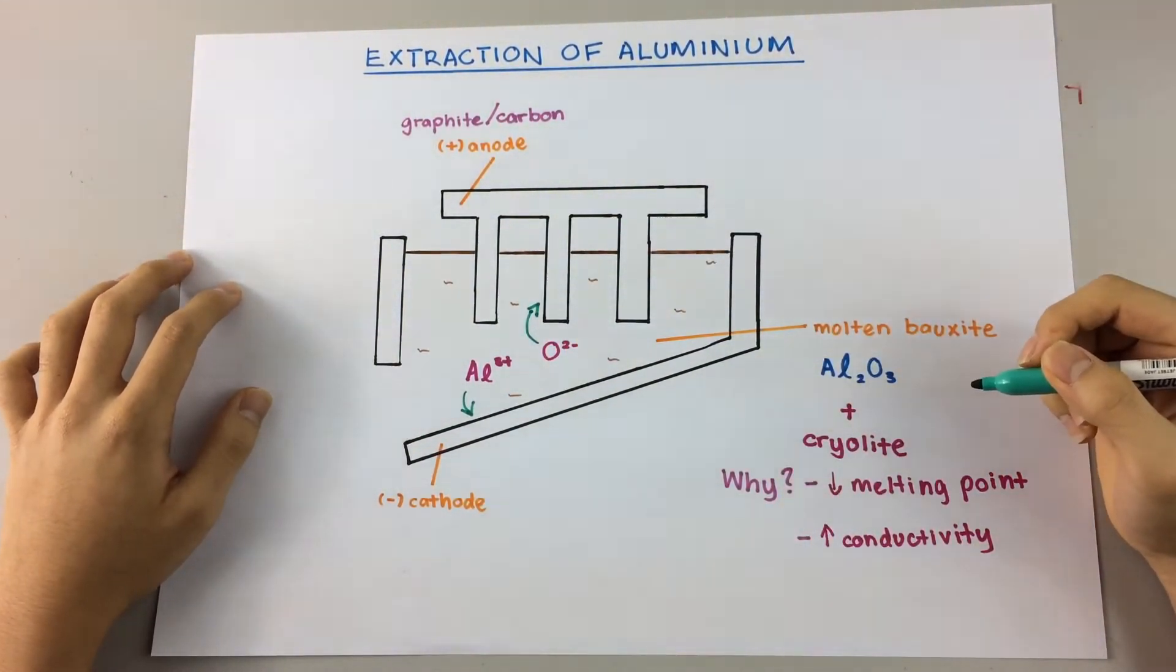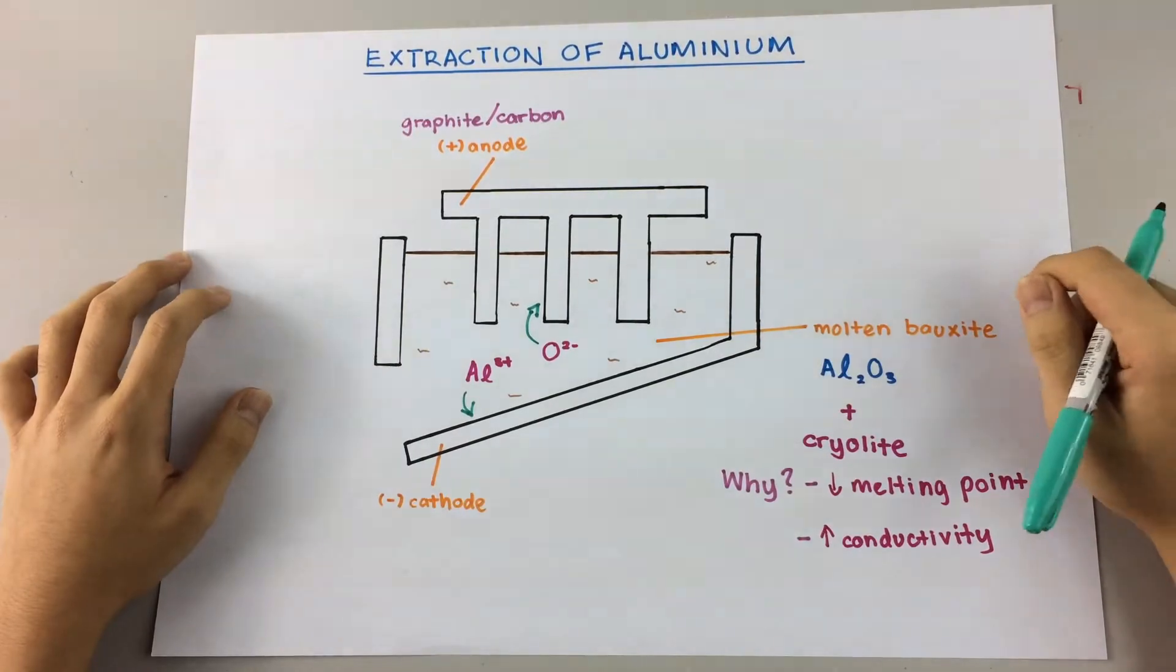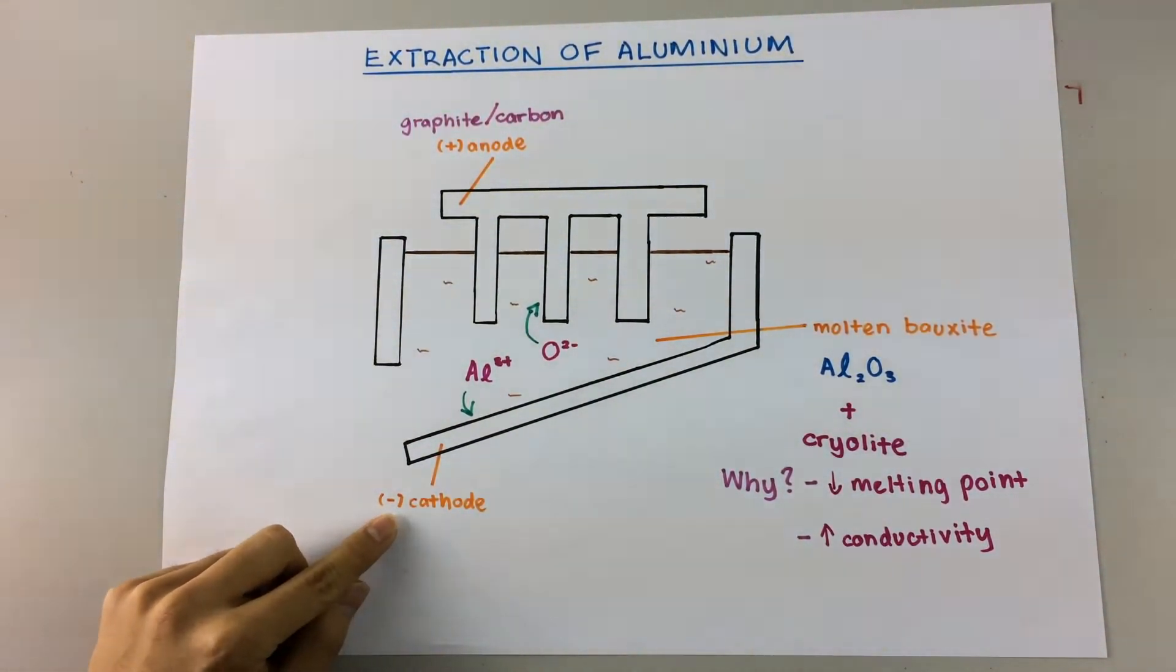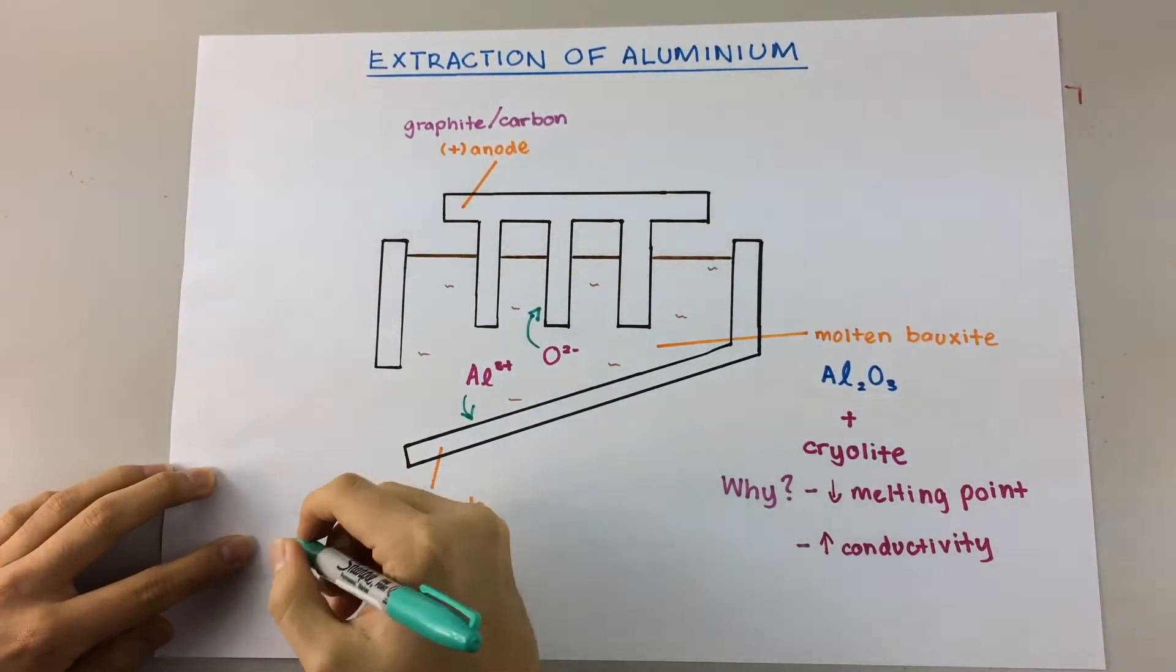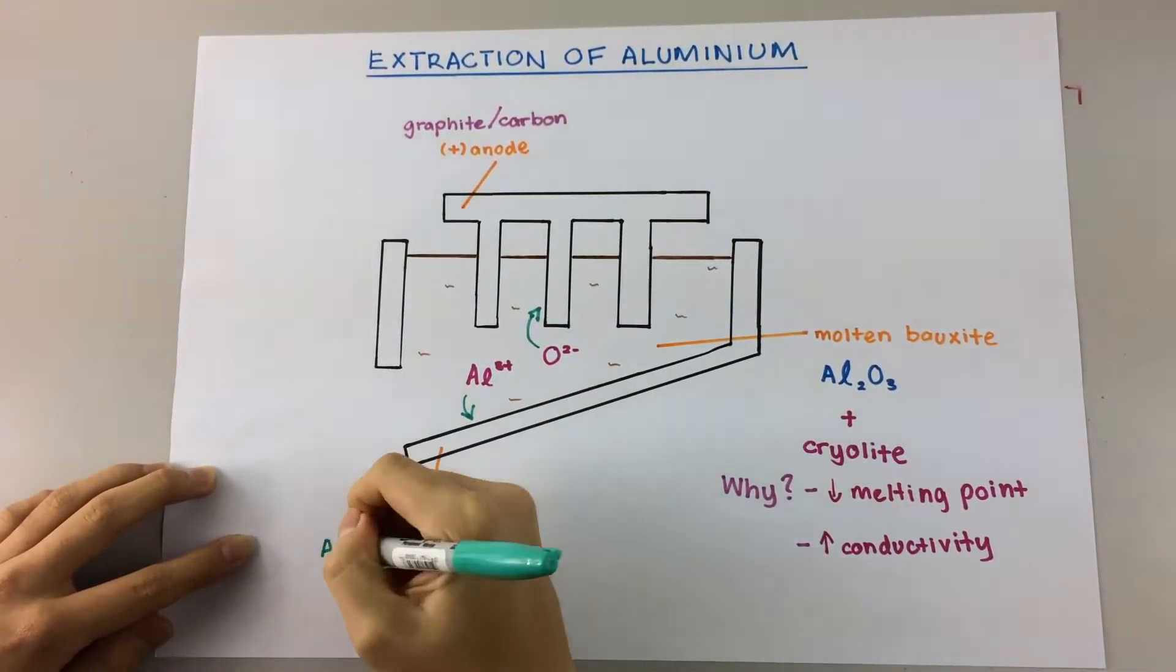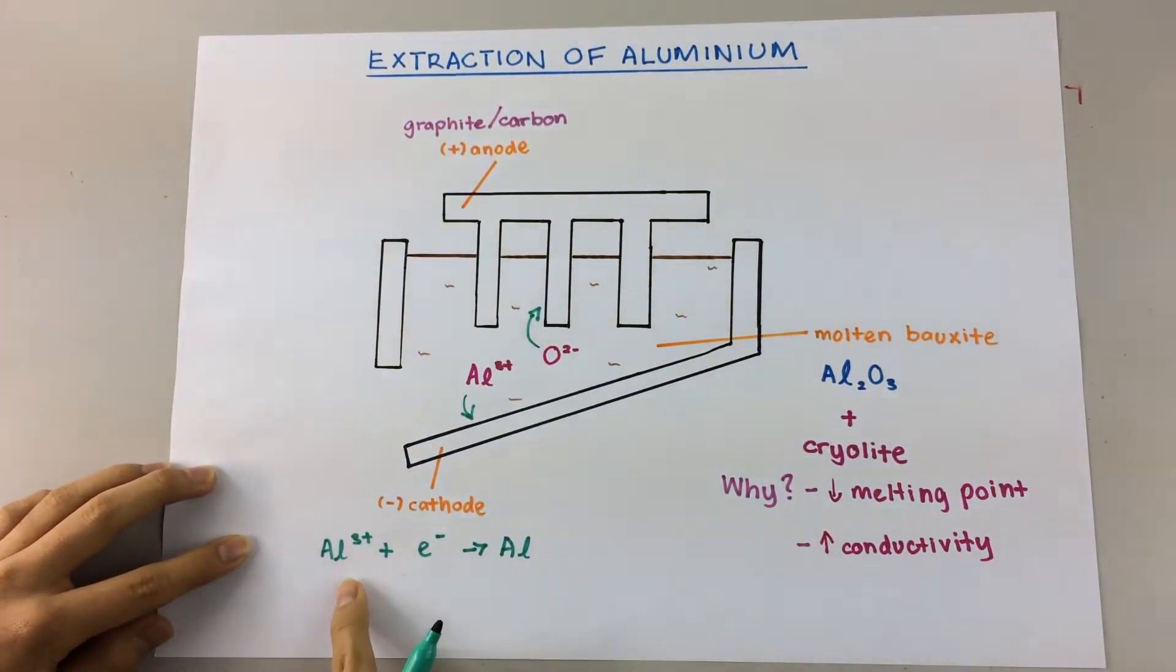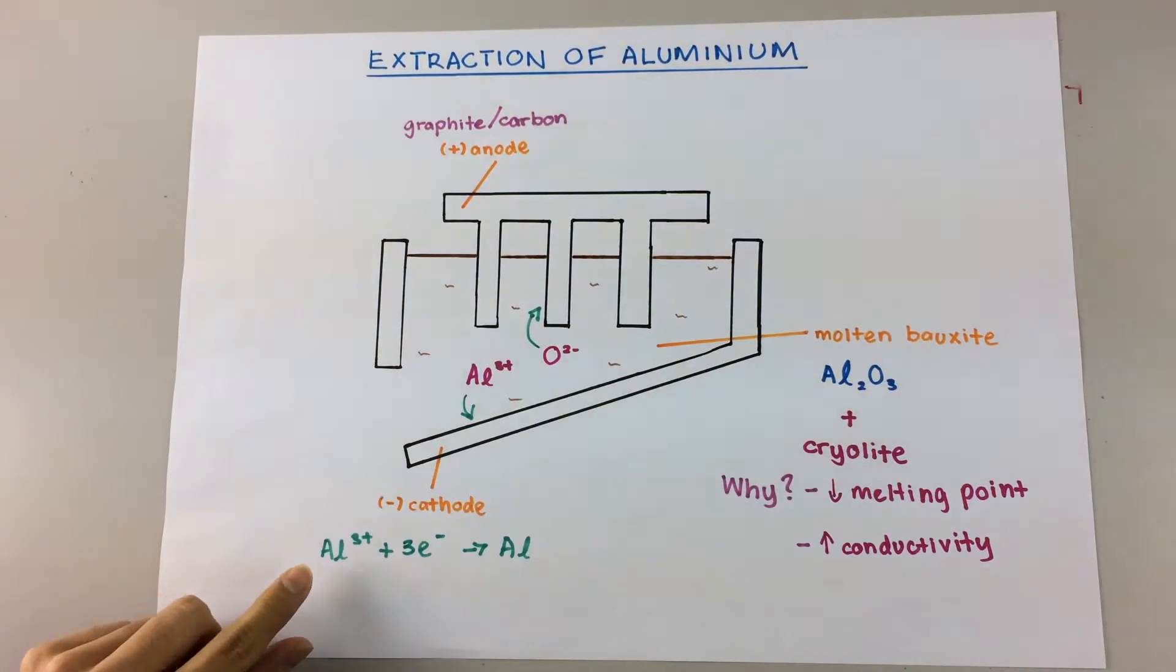Okay, so now let's look at the respective ionic half equations that occur at each electrode. So firstly, at the cathode, I'm going to write down the ionic half equation that takes place here. Al3+ gains electrons to form an aluminum atom. So Al3+ plus electrons to form Al. So we need to balance that. So that will be your equation at the cathode.